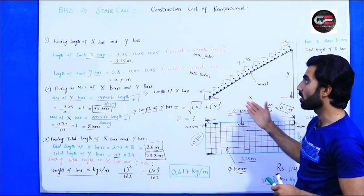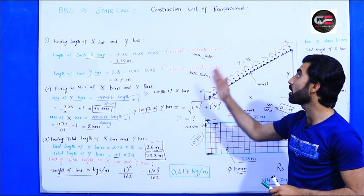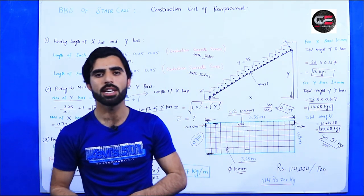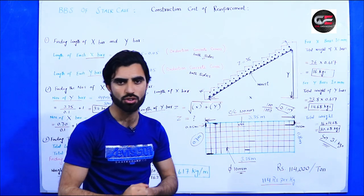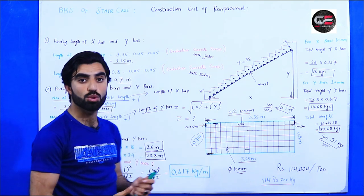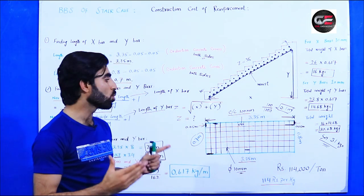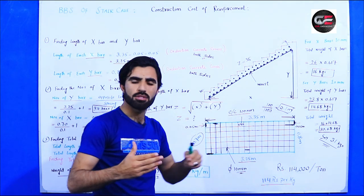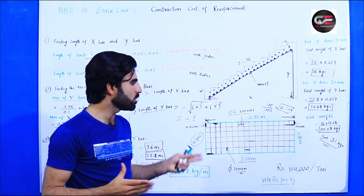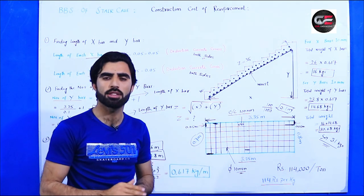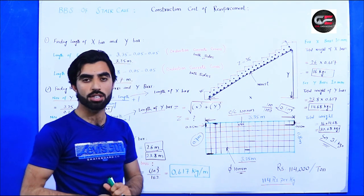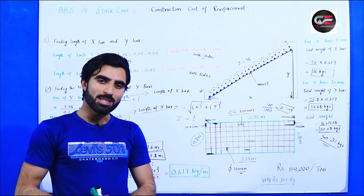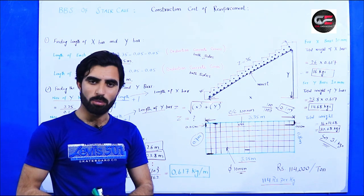This is the BBS of staircase and also the construction cost of reinforcement, which I have discussed. If you have any questions about this topic, you can comment. This is a sample method by which you can find the quantity of steel for a staircase. Thanks for watching — see you in the next video. Goodbye.